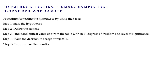Before seeing the example we will have a recap of the procedure for testing the hypothesis using the t-test. The first step is we have to state the hypothesis — we have to state the null and the alternate hypothesis. For the t-test for one sample, the null hypothesis is of the form H₀: μ = μ₀, and alternate hypothesis H₁: μ ≠ μ₀.